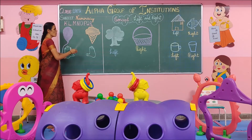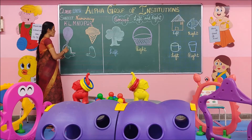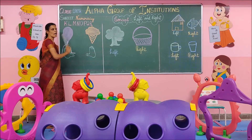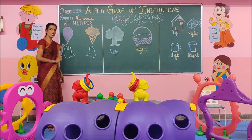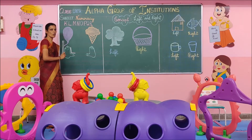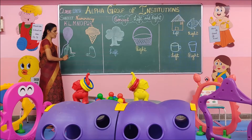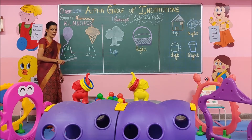Now here we have a few objects on the board. What is this? Balloon. And this one is ice cream. The balloon is placed on the left hand side. The ice cream is placed on the right hand side.